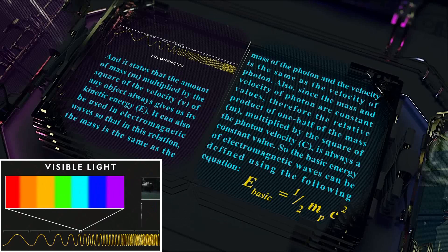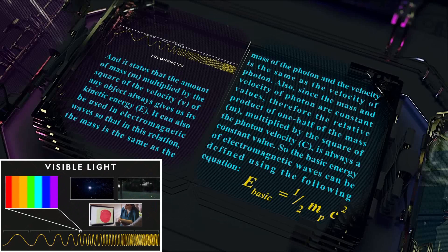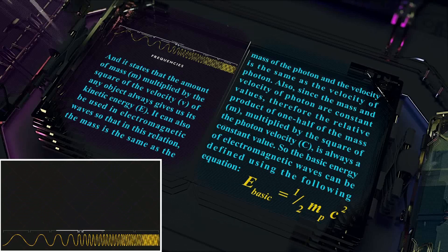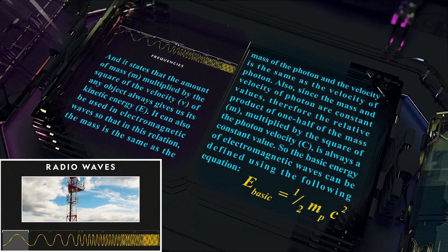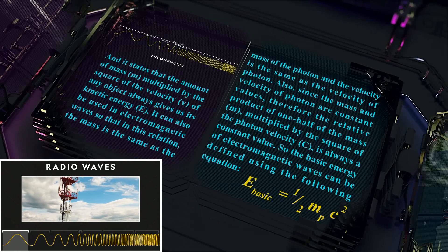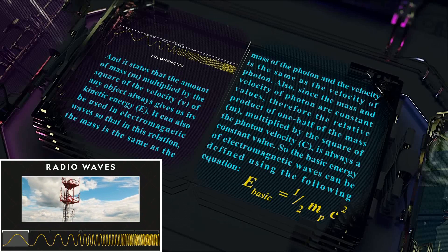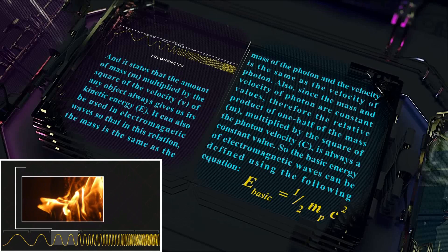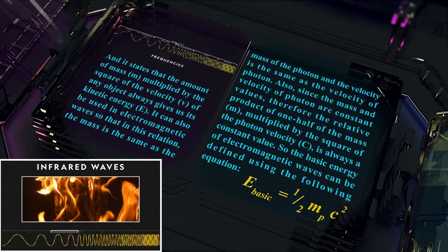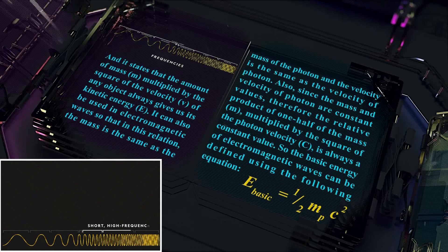It can also be used in electromagnetic waves so that, in this relation, the mass is the same as the mass of the photon and the velocity is the same as the velocity of the photon. Since the mass and velocity of the photon are constant values, therefore the product of one-half of the mass m multiplied by the square of the photon velocity c is always a constant value.